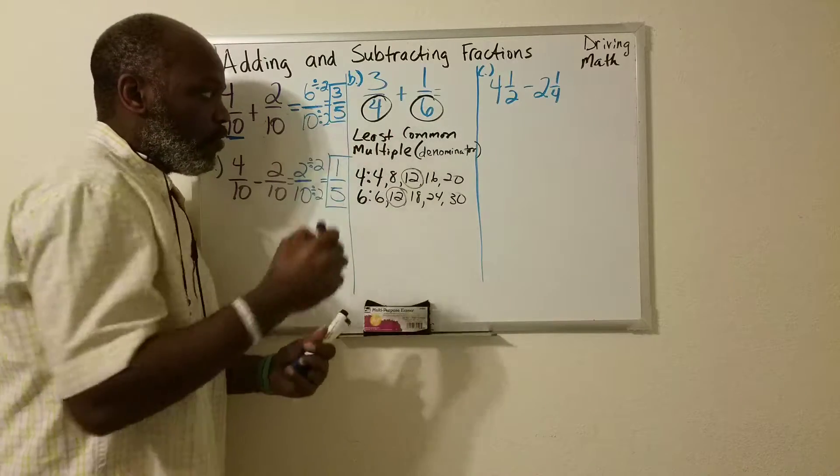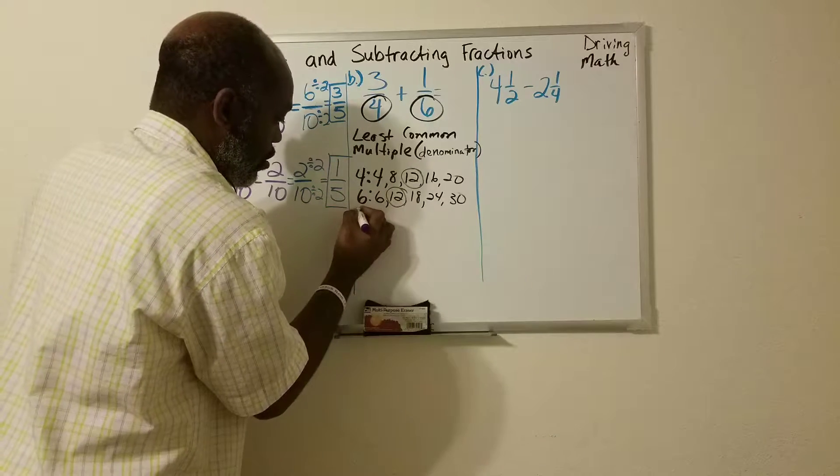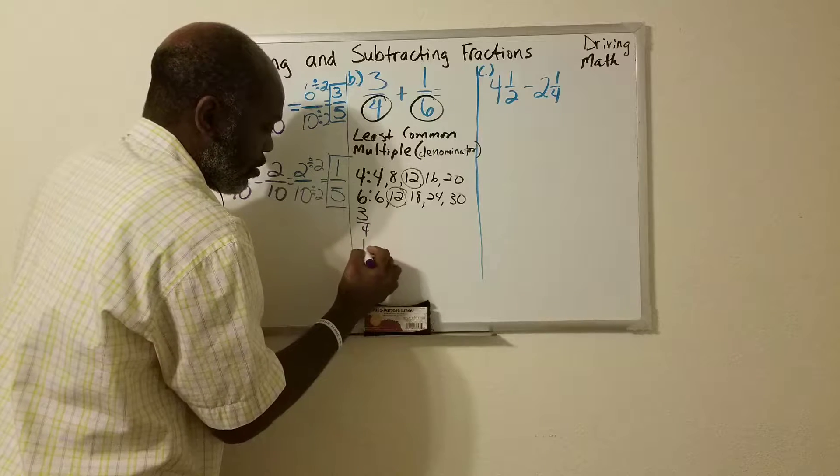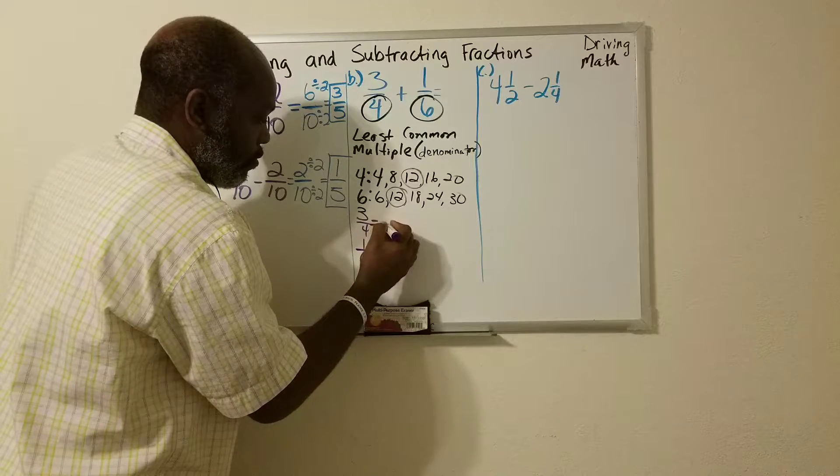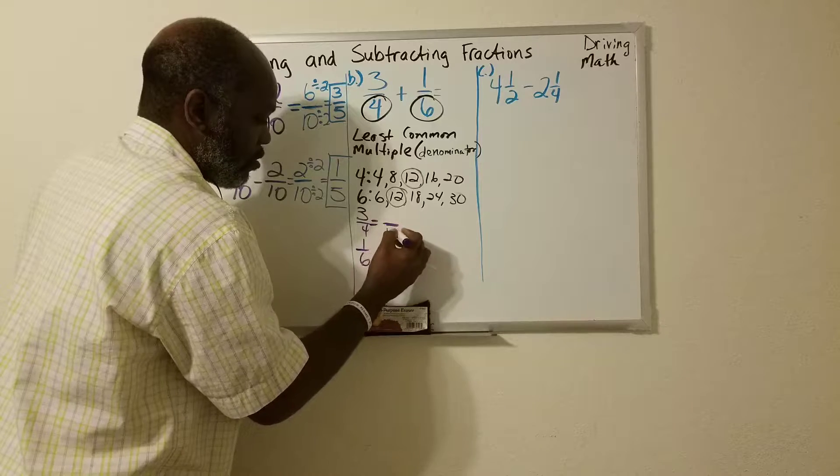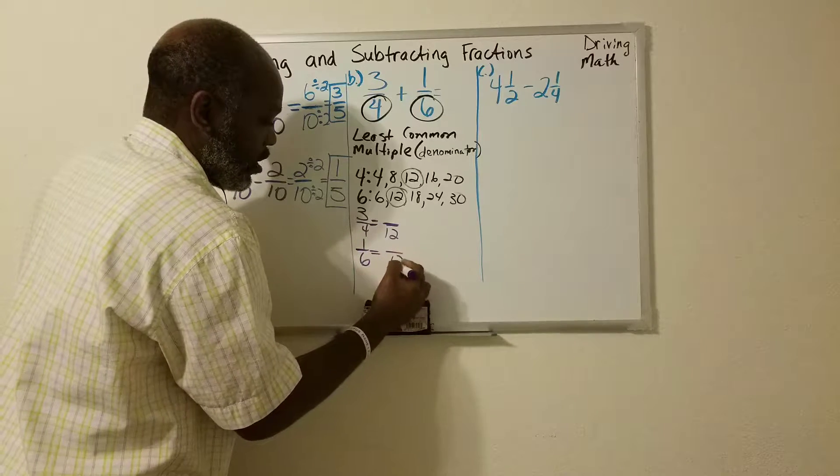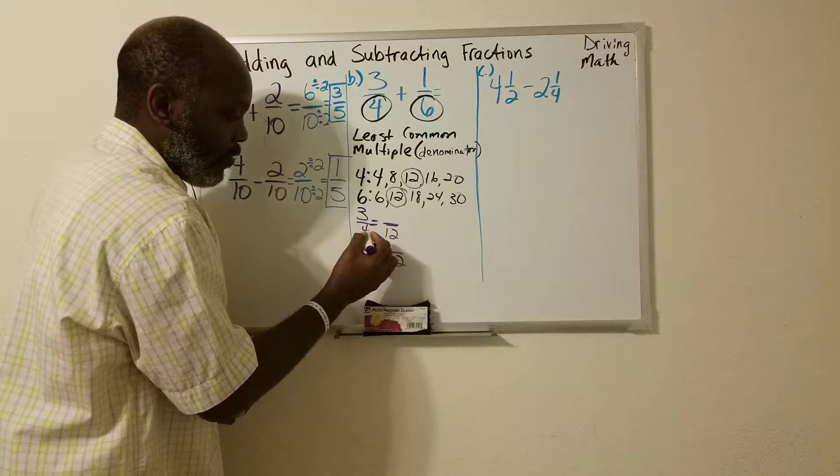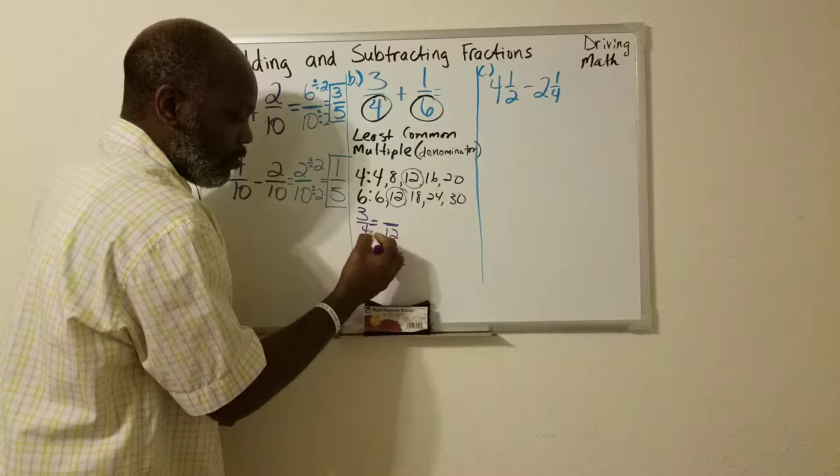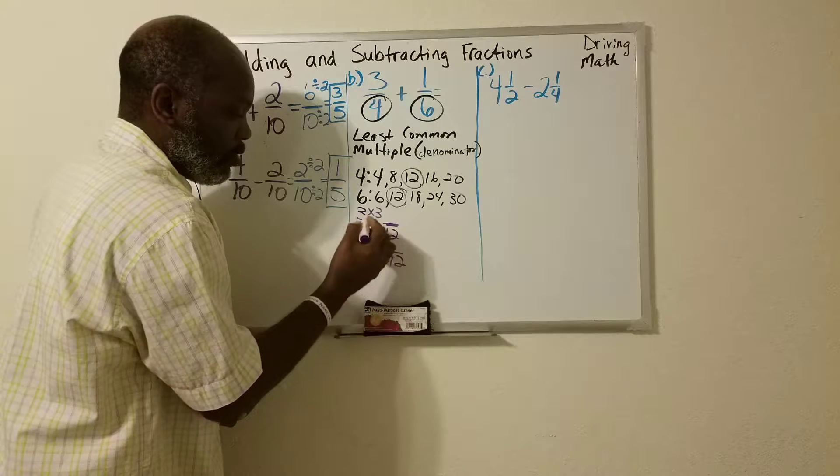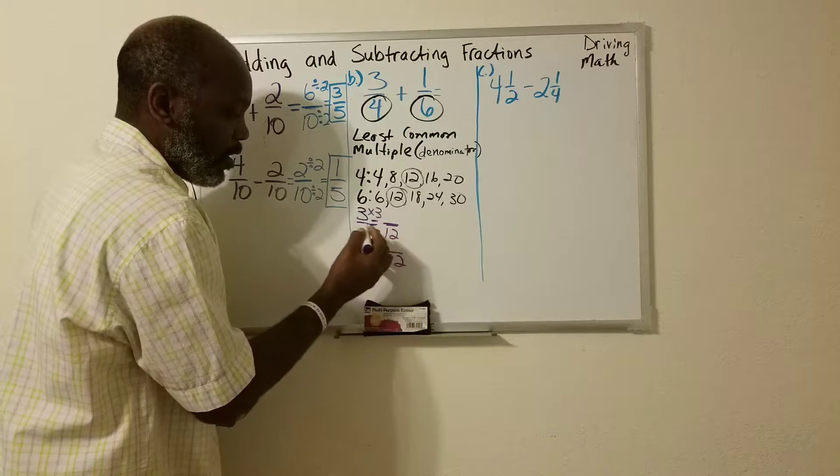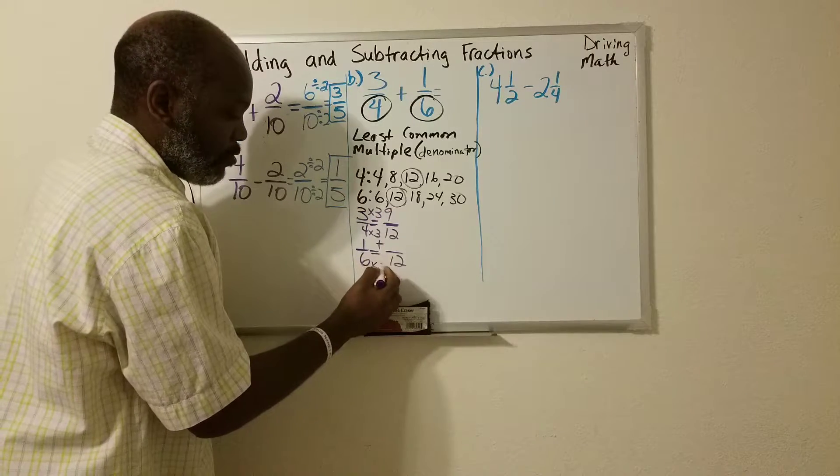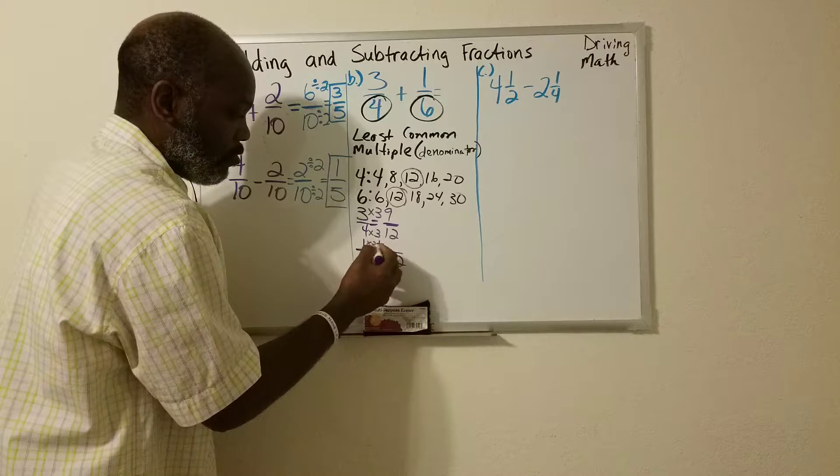So we have to rewrite. And what I do is I stack them. The new fraction has to have the number 12 in it. And remember we're adding those. So 4 times what gives me 12? 4 times 3. And 3 times 3. So whatever I do to the bottom to multiply, I do to the top. 3 times 3 is 9. And then 6 times 2 is 12. And 1 times 2 is 2.